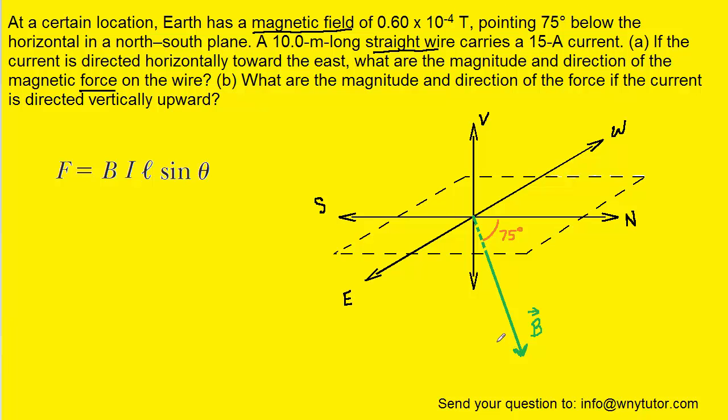Our next step would be to draw in the wire. In part A it says that the current is directed horizontally toward the east, so we're going to draw the wire projecting along what we have labeled the east direction. Here it is. We've colored it in red and we know that the current is flowing towards the east, so we can project a vector towards the east and label it with I for the current.